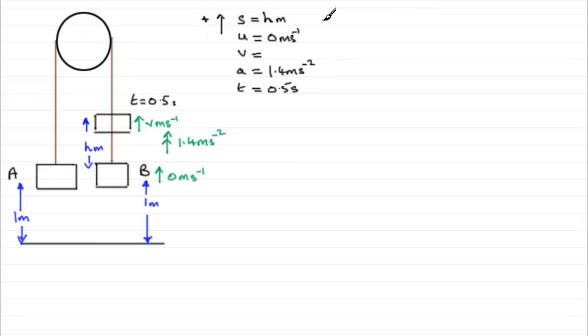Now, what equation can we use to get V? Well, it would be V equals U plus AT. So if we were to use V equals U plus AT, we can get V as being equal to U, which we know is 0. So it's just going to be A times T. 1.4 multiplied by 0.5. And that's 0.7. 0.7 meters per second. So we know that particle B now is moving at 0.7 meters per second when the string breaks.